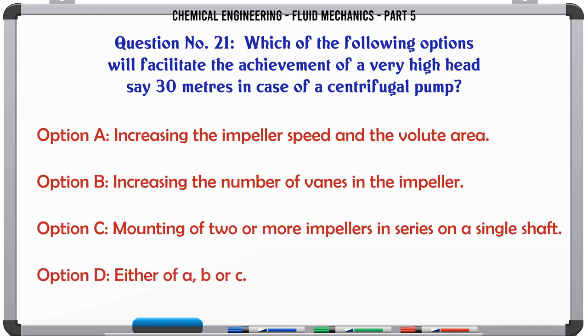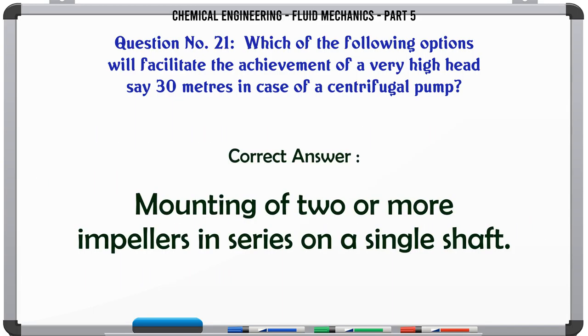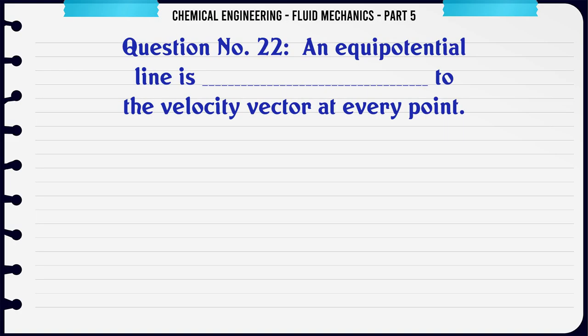Which of the following options will facilitate the achievement of a very high head, say 30 meters, in case of a centrifugal pump? a) increasing the impeller speed and the volute area, b) increasing the number of vanes in the impeller, c) mounting of two or more impellers in series on a single shaft, d) either of a, b, or c. The correct answer is mounting of two or more impellers in series on a single shaft.